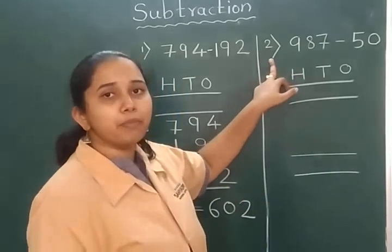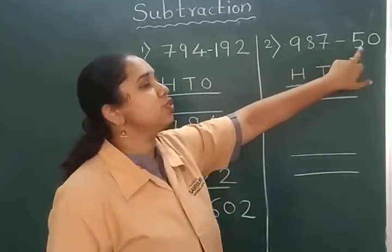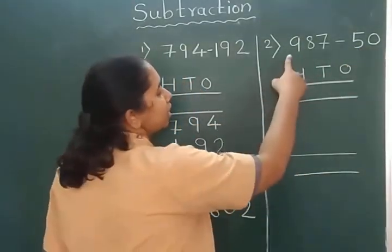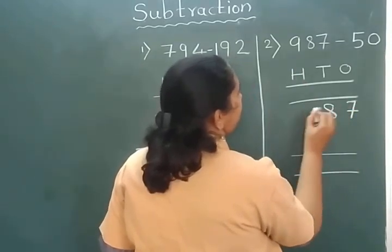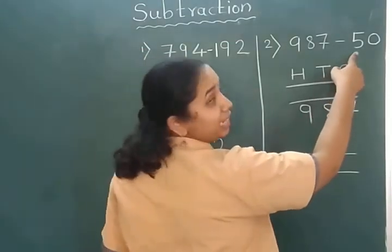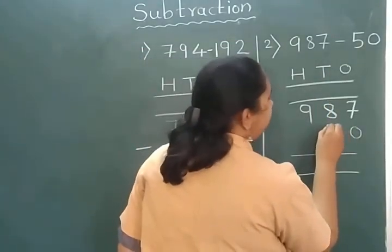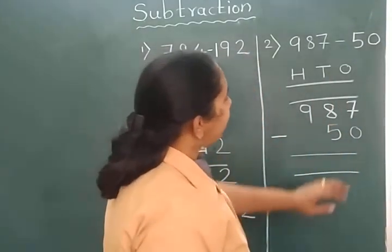We will see one more example: 987 minus 50. So first I will write the bigger number as per the places. Now I will write the second number, 50. Now again we will subtract.